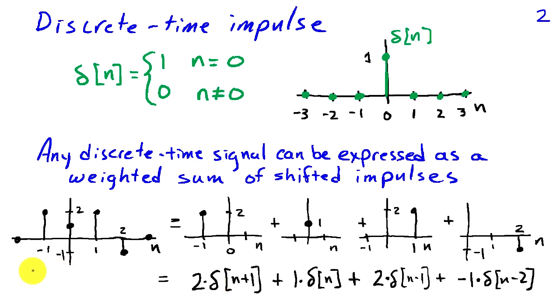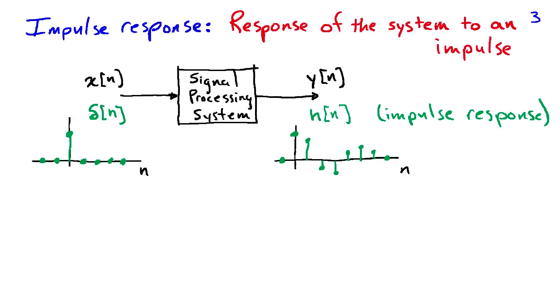So in this case, I've expressed this signal as a weighted sum of shifted impulses. The impulse response is the response of a system to an impulse.